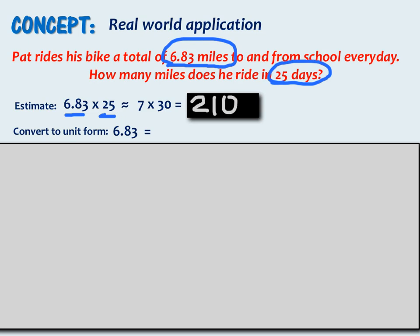One very important thing to remember when you are estimating is that if you round both of your numbers up, like 6 and 83 hundredths we round it up to 7 and 25 we round it up to 30, that makes our approximate product a high product, which means it is going to be more than our actual product. So we need to keep that in mind when we actually multiply.